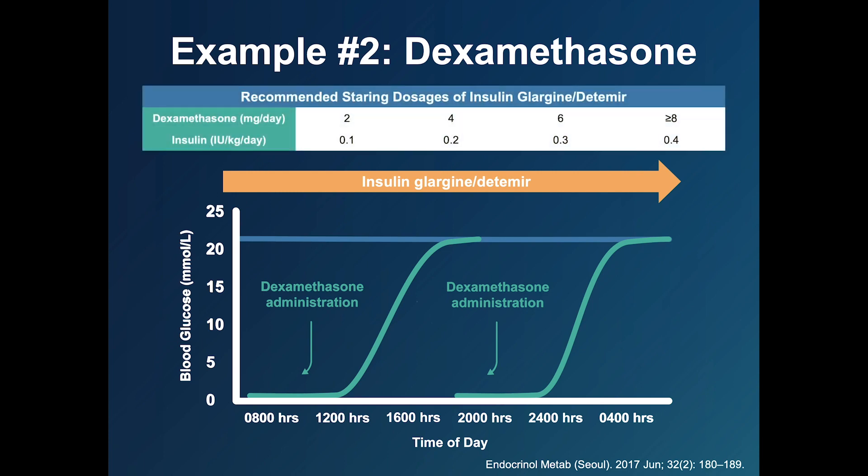A table of recommended starting dosages of insulin glargine or detemir is provided to treat dexamethasone-induced hyperglycemia. Please keep in mind that insulin dosage will need to be adjusted and will vary between patients.